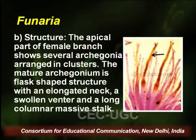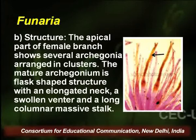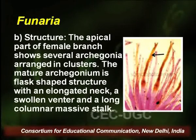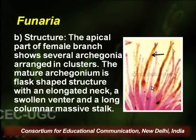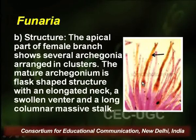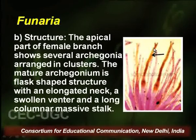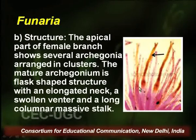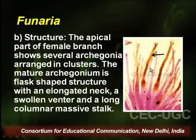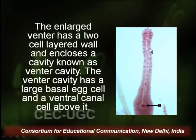The apical part of the female branch shows several Archegonia arranged in clusters. The mature Archegonium is flask-shaped with an elongated neck, a swollen venter at the base, and a long columnar massive stalk. Above the stalk is a swollen round venter, and above the venter is a long elongated neck made up of 4 to 6 cells.